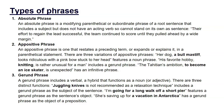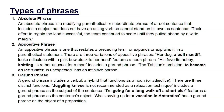A gerund phrase includes a verbal — a hybrid that functions as a noun or adjective. There are three distinct functions: 'Juggling knives is not recommended as a relaxation technique' includes a gerund phrase as the subject; 'I'm going for a long walk off a short pier' features a gerund phrase as the sentence object; 'She's saving up for a vacation in Antarctica' has a gerund phrase as the object of a preposition.